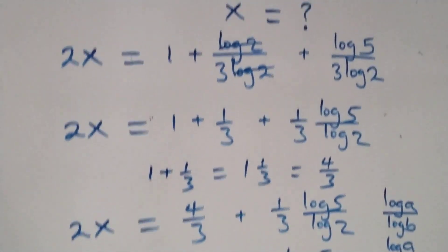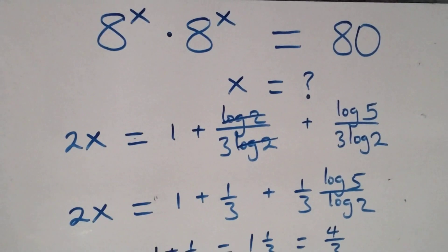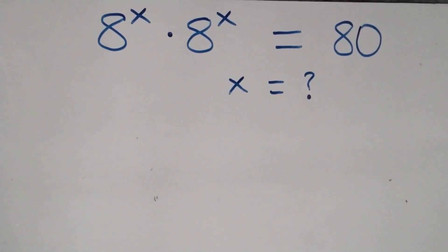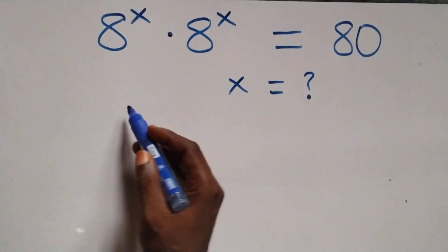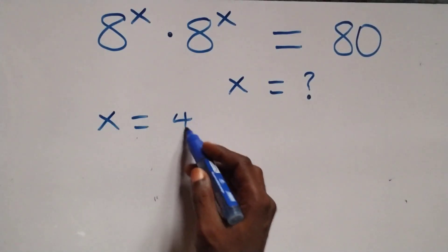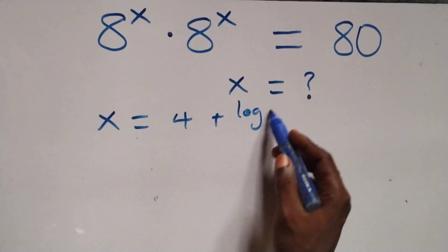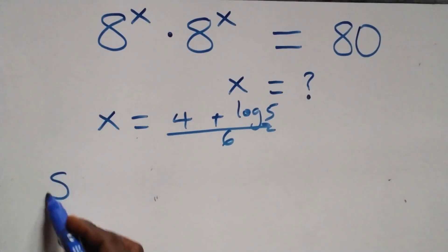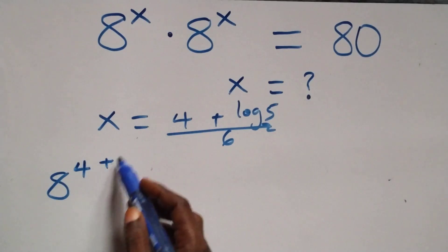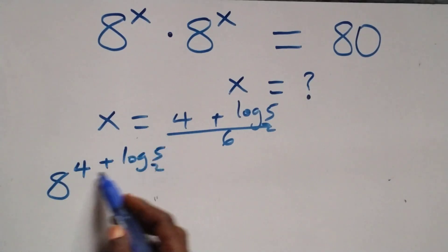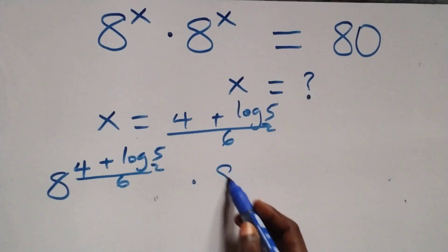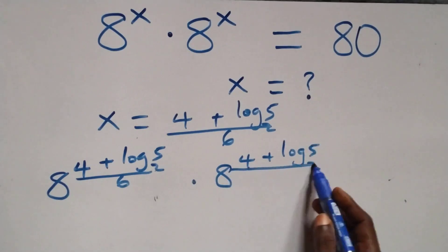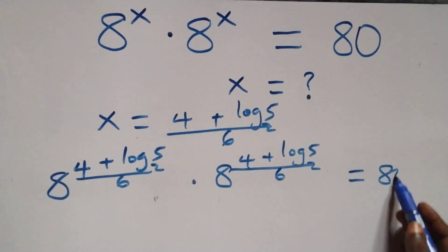Let's check whether this value satisfies the given problem. We substitute x equals (4 plus log 5 base 2) over 6 back into the equation. We get 8 raised to power x squared, and also 8 raised to power (4 plus log 5 base 2) over 6, which should equal 80 on this side.